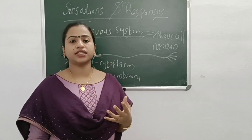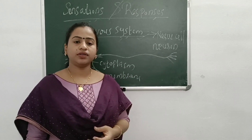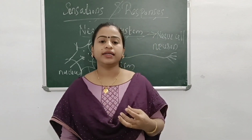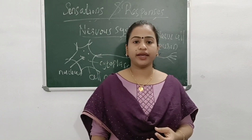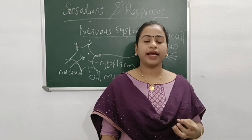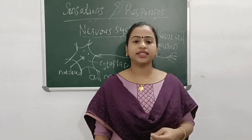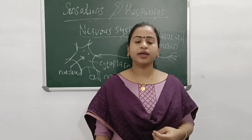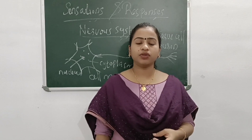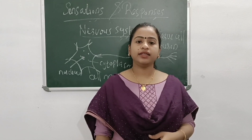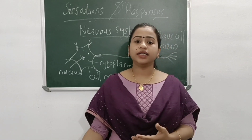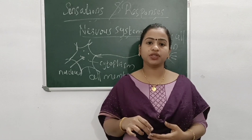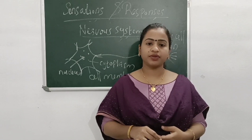In the next class, we will discuss in detail about the structure of the neuron. In today's class, we discussed about senses and stimuli, different types of stimuli — external and internal stimulus — the receptors, how they identify and receive stimulus, how they produce impulses, the nervous system, and the neuron. I hope you all understood today's class. Thank you, students.